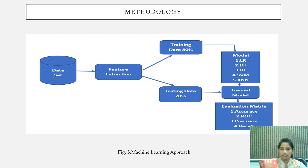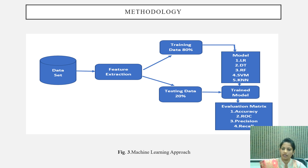We used the dataset from the UCI Machine Learning Repository. From this dataset, we extracted the features. After this, we divided our dataset into training and testing in the ratio of 80 to 20. We then trained the model using logistic regression, decision tree, random forest, support vector machine, and k-nearest neighbor algorithms. After training the model, we evaluated it on the basis of accuracy, ROC, precision, and recall.